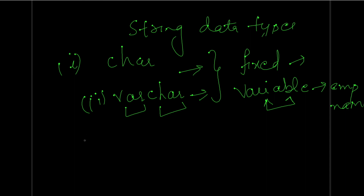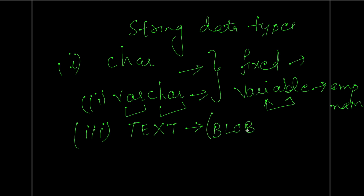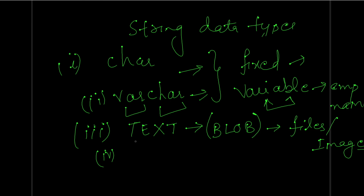Apart from CHAR and VARCHAR, if you want to store large files and images, you use the TEXT data type, also called BLOB (Binary Large Object). There is no fixed length specified for this type. Similar to numeric types, TEXT also has variants: TINYTEXT, SMALLTEXT, MEDIUMTEXT, and LONGTEXT, depending on the size of the file or image you want to store.